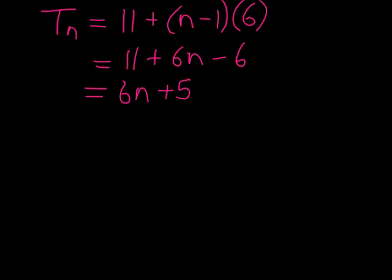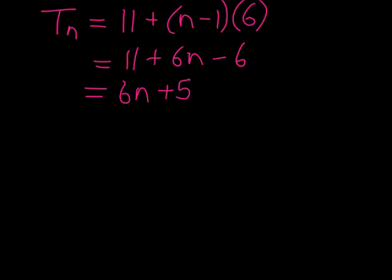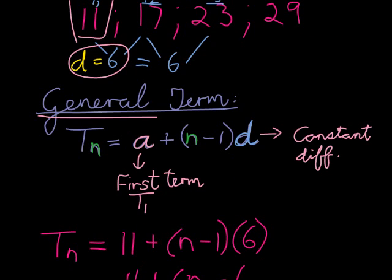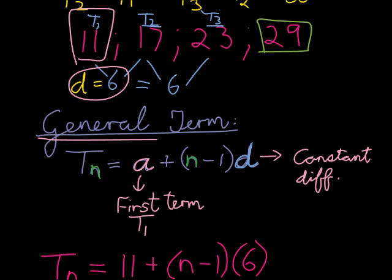Now with that, we can take any term number and find the term value. So for example, t4. Let's just test the case with t4. 6 times 4 gives me 24 plus 5 gives me 29. Just as a confirmation, we did have 4 terms up here. The 4th term was 29. t4 was 29.